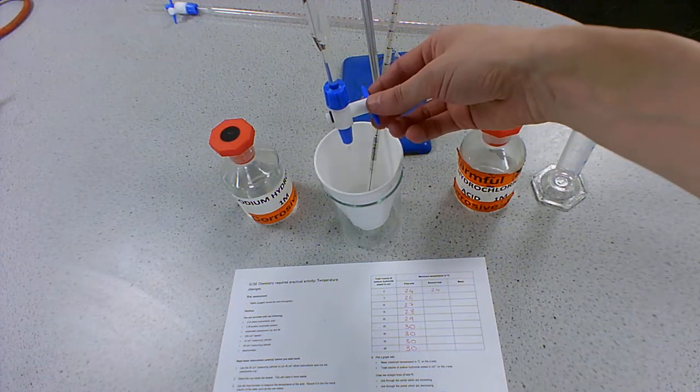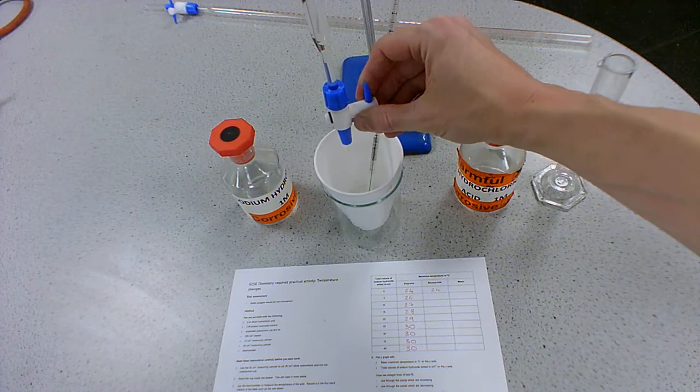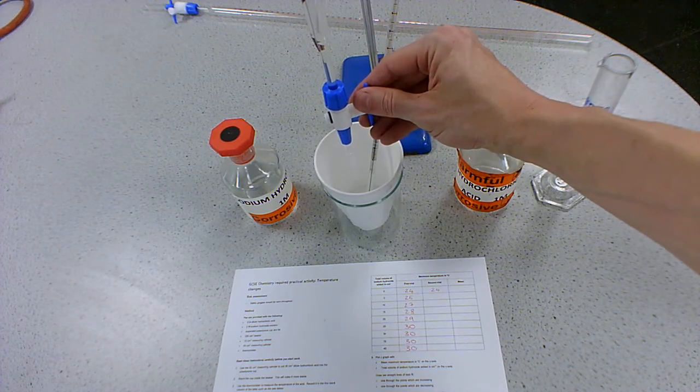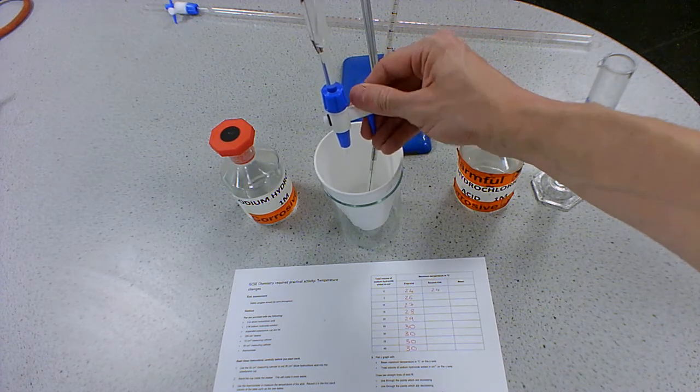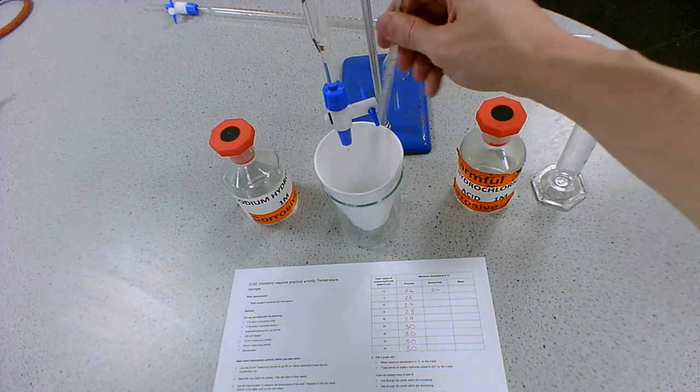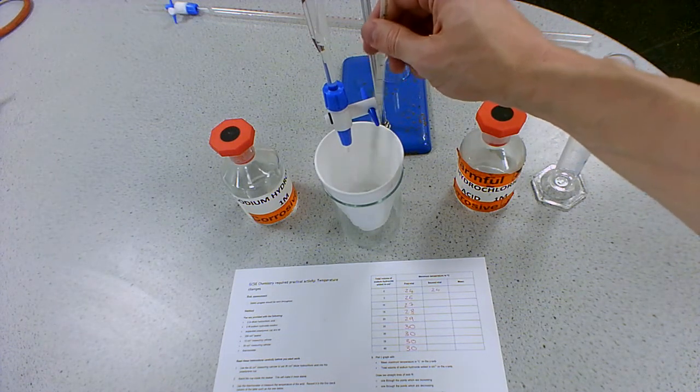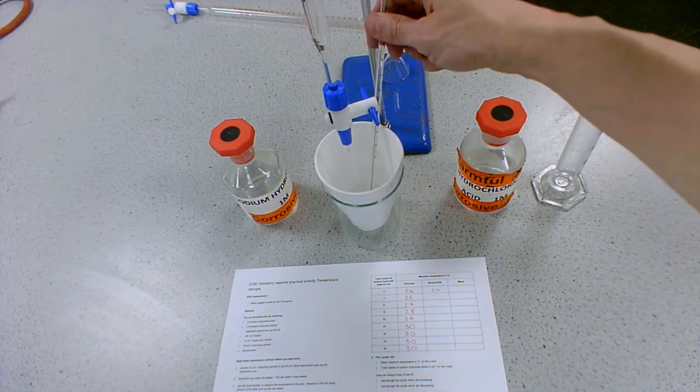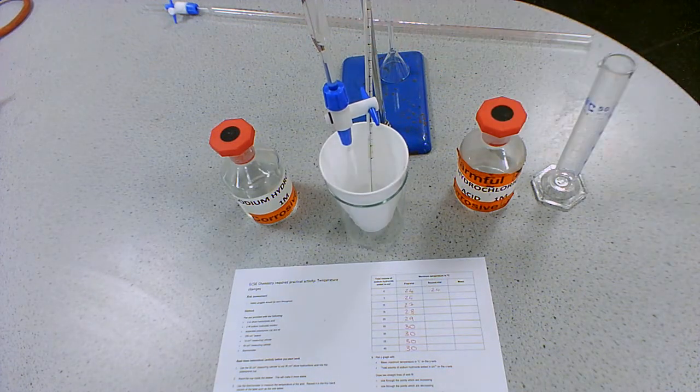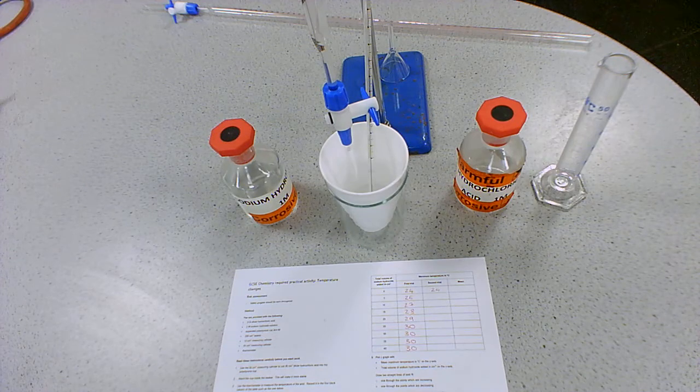And then we're going to add five centimeters cubed, so I'm going to open the tap, let five centimeters cubed be added, and then close the tap. And give it a quick stir, and just wait a couple of seconds, it's going to take a little while for the thermometer to catch up, they're not instant. And then record the temperature, and that is now 26.